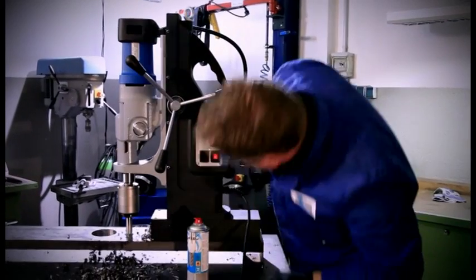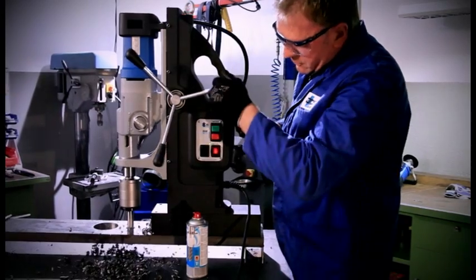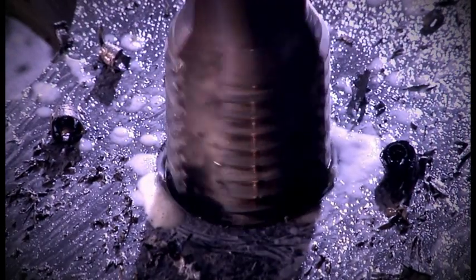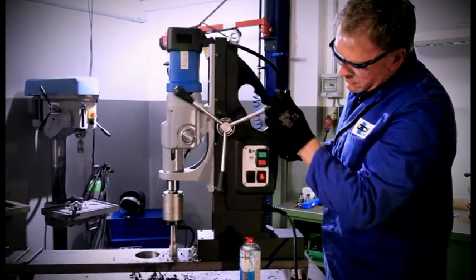If so, change to counter-clockwise rotation and immediately remove the tap from the tap point by moving the machine slide upwards. By doing so, damage to the thread is prevented.